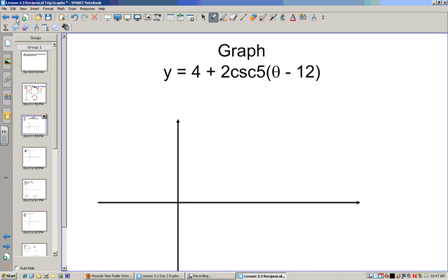Alright, now take a second and try to draw, if you can, y equals 4 plus 2 cosecant to 5 theta minus 12. Alright, hopefully people have given it a shot. We do the same thing that we did before.